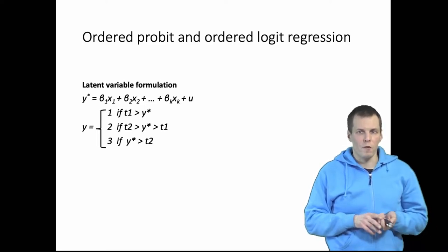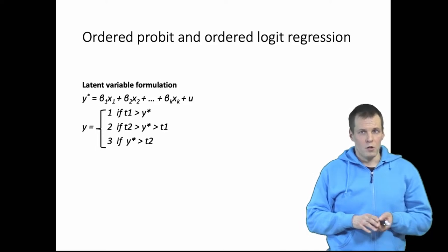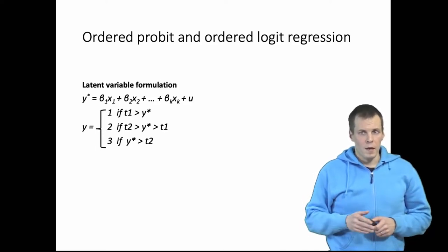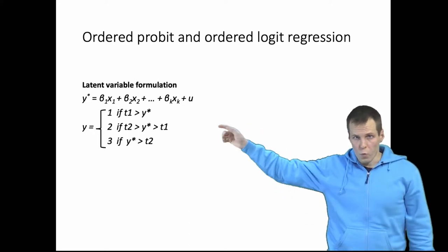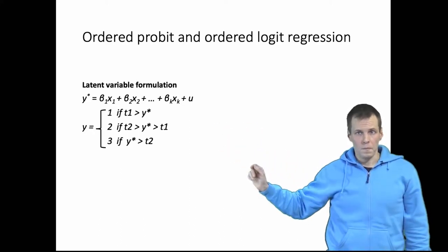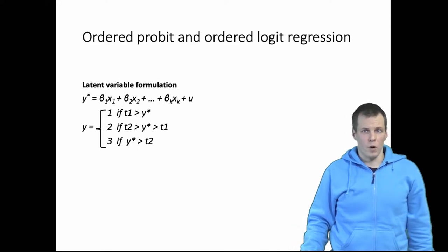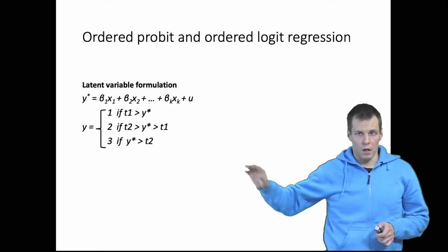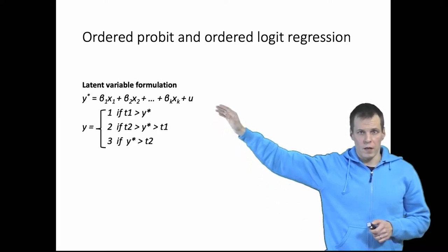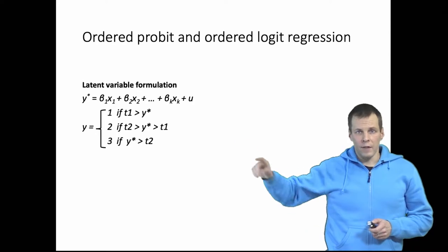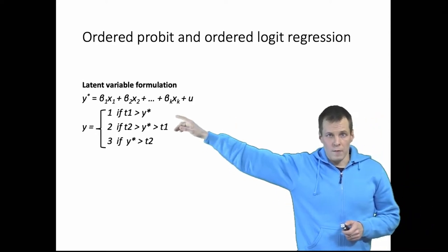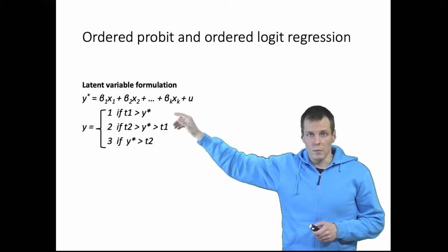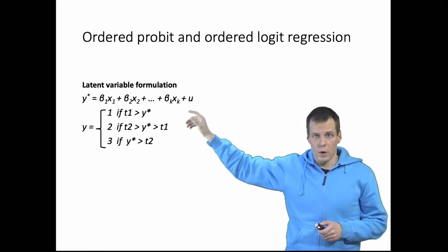These are fairly straightforward extensions to the binary case where the dependent variable is one or zero. Let's take a look at a dependent variable receiving three values: one, two, and three. One way to formulate the ordered model is to use the latent variable formulation, which is covered in the probit regression video. We have a latent variable that is a sum of regression coefficients multiplied by the data plus a normally distributed error term with a variance of one.